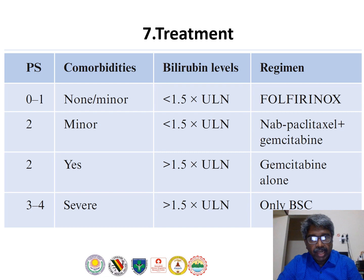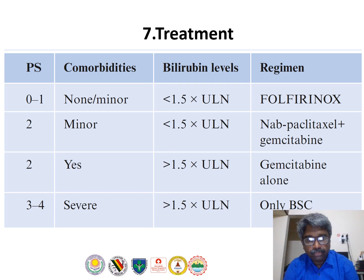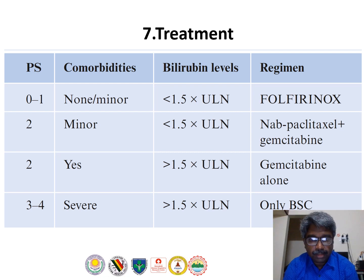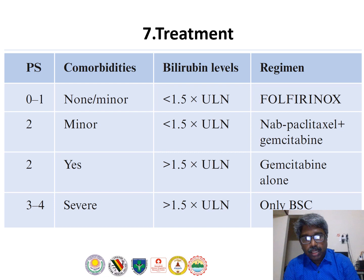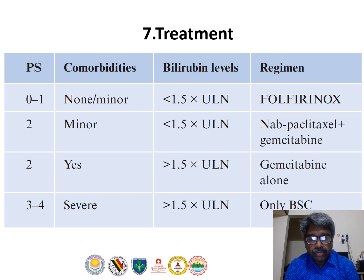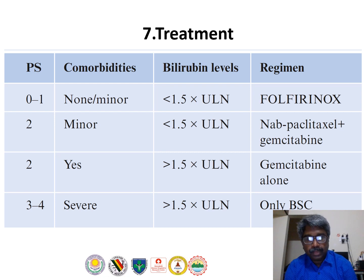The major factors guiding chemotherapy selection are performance status, presence of comorbidities, and extent of biliary obstruction based on bilirubin levels. The best regimen of choice is FOLFIRINOX, but in our setting most patients are not fit for this toxic regimen. The choice is then between gemcitabine with nab-paclitaxel or gemcitabine alone. For patients with PS 3–4 and major comorbidities, best supportive care is also a treatment option.